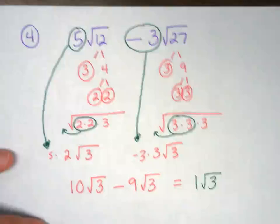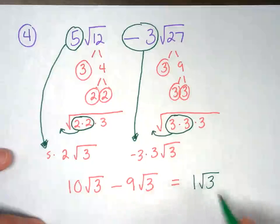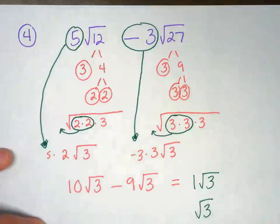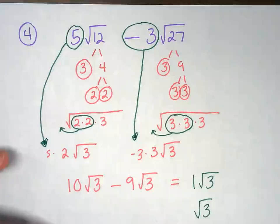And that is actually our final answer. 1√3. Or another way of writing it is just √3. They both mean the same exact thing.